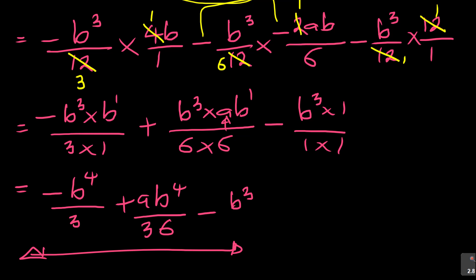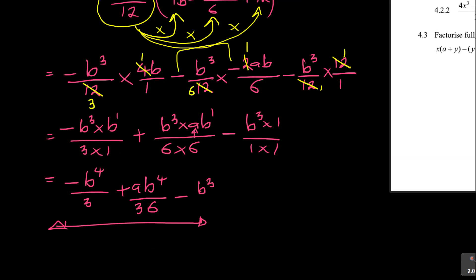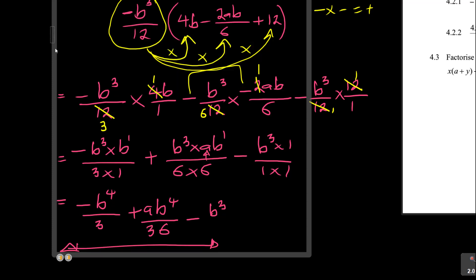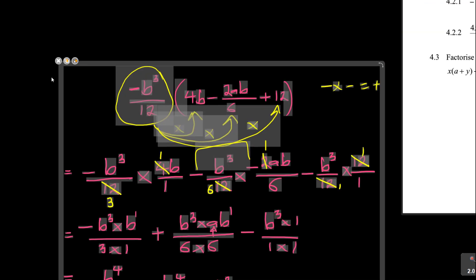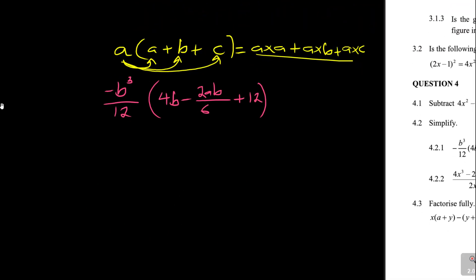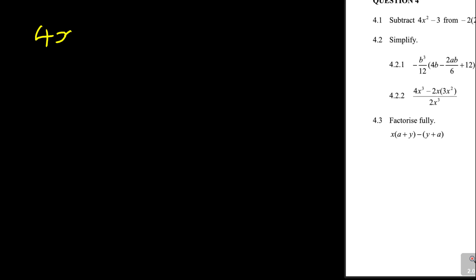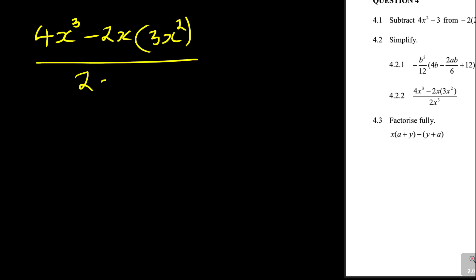Not really difficult - I hope it makes sense. I don't want to make this video too long. Let me try one more if time allows, otherwise catch me in the next lesson. Let's do this one: simplify 4x cubed minus 2x bracket 3x squared, all over 2x cubed.